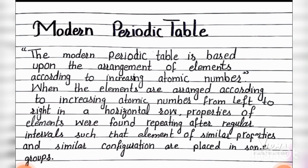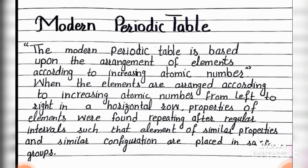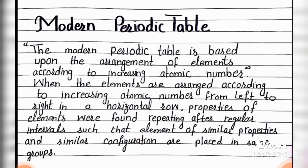We are going to discuss the modern periodic table. The modern periodic table is based upon the arrangement of elements according to increasing atomic number. In contrast, Mendeleev's periodic table arranged all elements according to atomic mass.